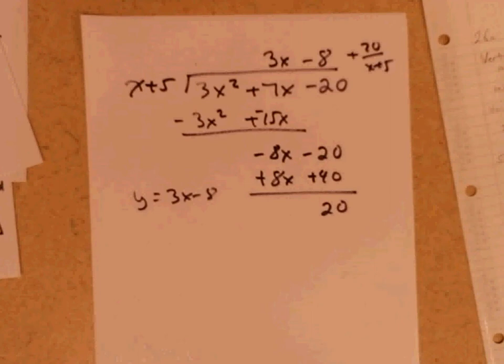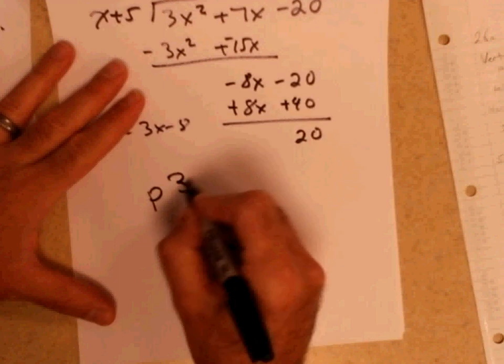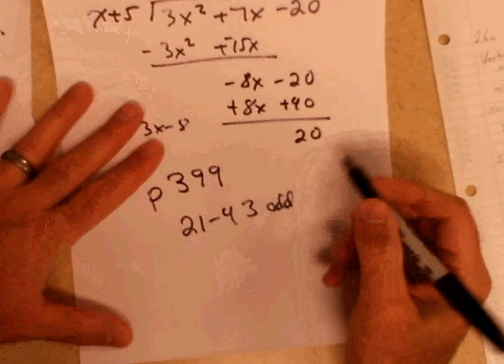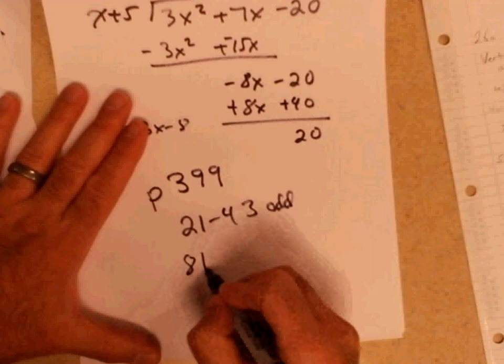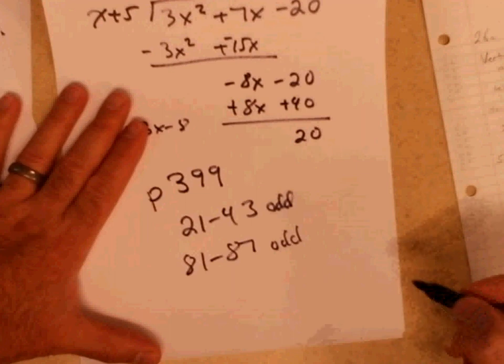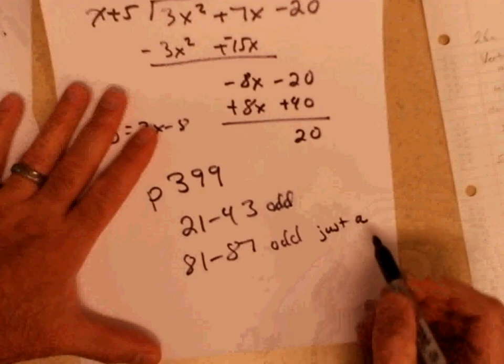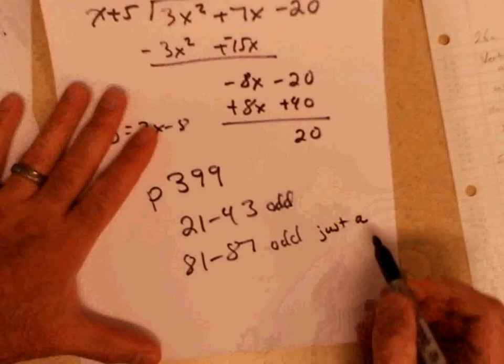For this assignment, they don't ask you to graph — they just ask you to find the parts, so just read the directions and do the best you can, and then hopefully we'll put it all together tomorrow. Page 399. On the second part, problems 81 to 87, there's an A and a B — you just have to do A, okay? Just A for the second part.